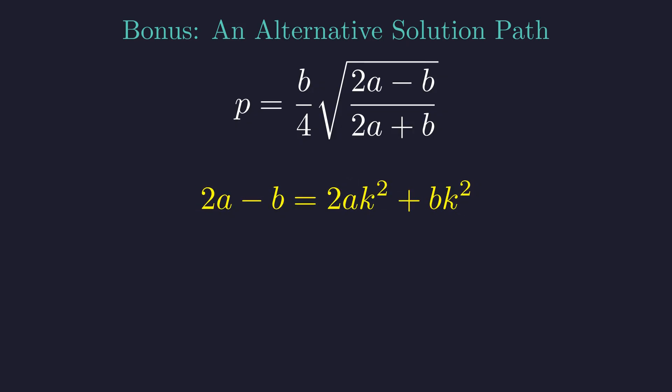Now let's collect all terms with a on one side and all terms with b on the other. Rearranging terms. Factor out common terms. Beautiful! We've separated the variables completely.